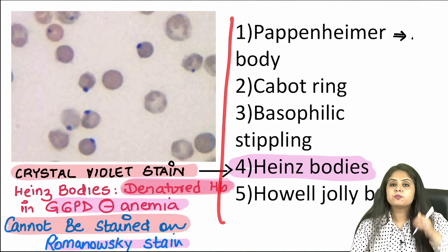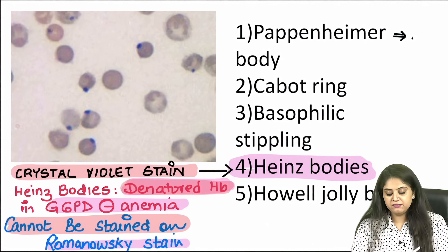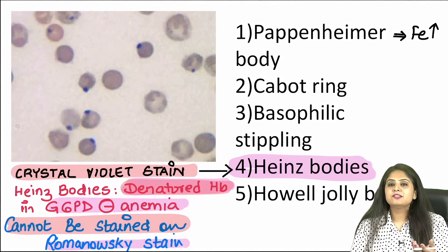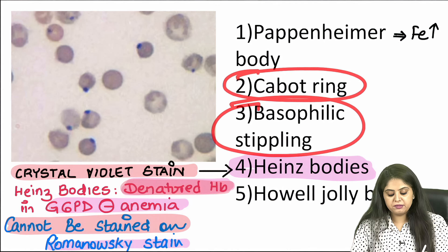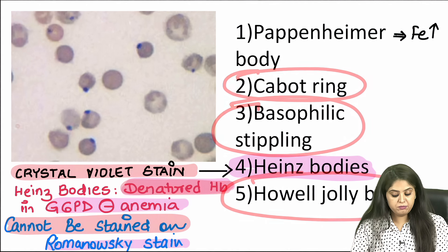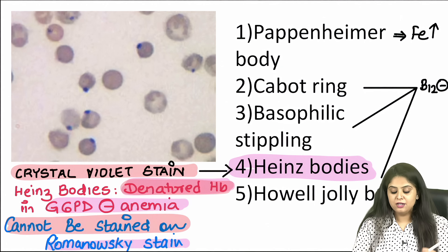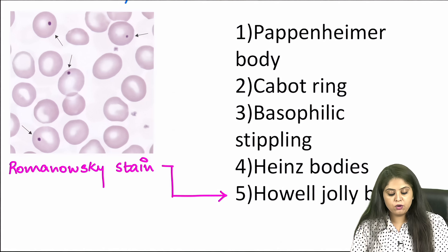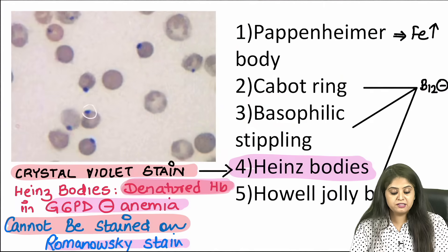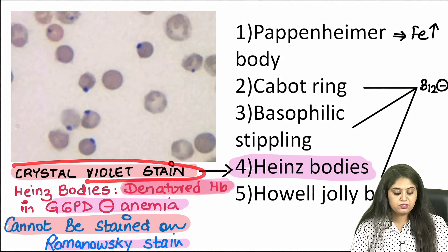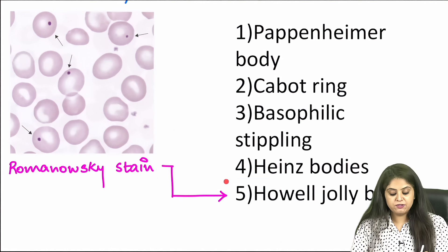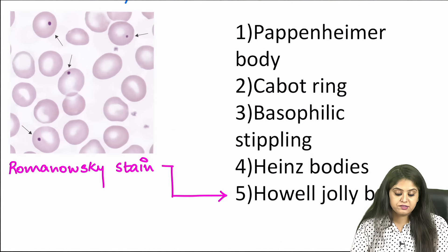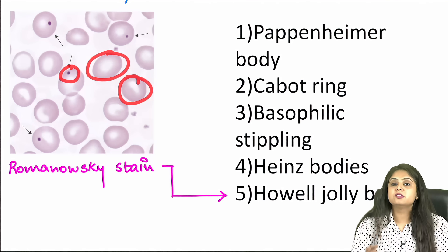Denatured hemoglobin cannot be stained on Romanovsky stain — that is a Heinz body. Apart from that, Pappenheimer bodies are seen when iron is excess, like in sideroblastic anemia. Others such as cabot rings, basophilic stippling, or Howell-Jolly bodies are seen with B12 deficiency, known as megaloblastic anemia. Howell-Jolly body is also usually a single body, but it is stained on Romanovsky, giving a beautiful reddish color.